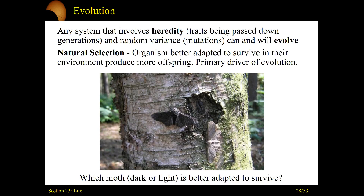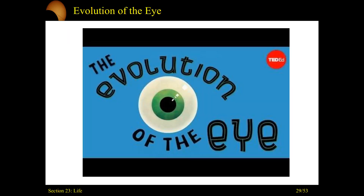One misconception constantly thrown out there about evolution is this idea of survival of the fittest — the biggest, strongest, fastest thing lives. No. All you need for natural selection is who does the best job of reproducing, who gets to live the longest. It's not about being bigger, faster, stronger. It's about being adapted to survive the longest in your environment and produce the most offspring. If you have more questions about evolution, I highly recommend a TED Talk describing the evolution of the eye — how natural processes could produce the eyeball of a human being or any organism on Earth.